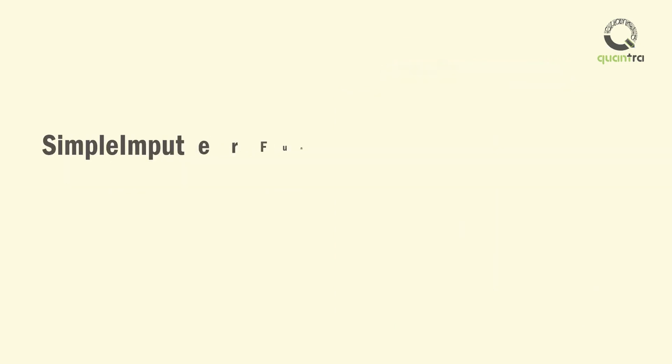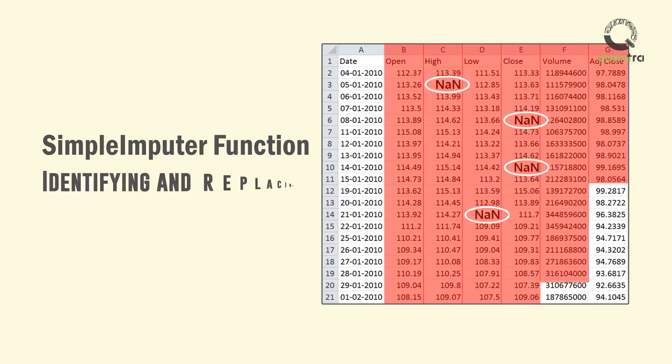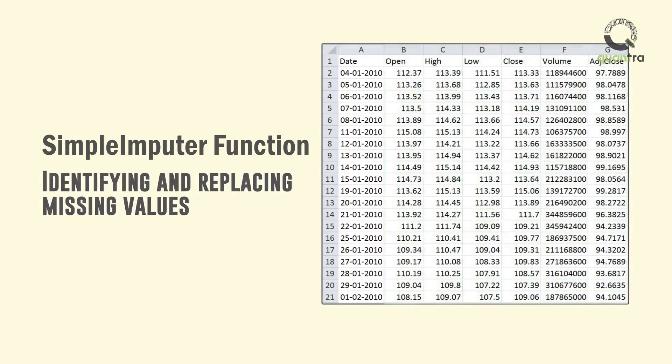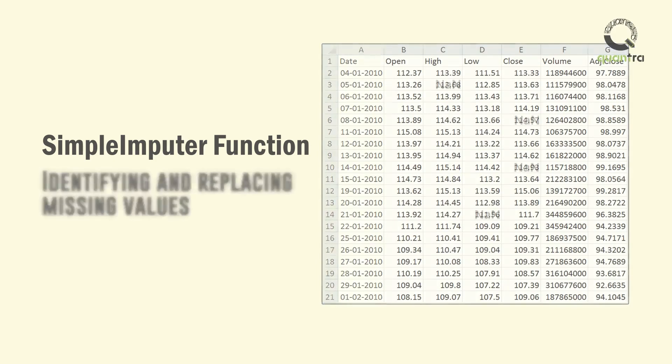For the S&P 500 index in our model, we instantiate the imputer function using the variable imp, which helps in identifying and replacing missing values. Imp will be called later through the pipeline function using steps to execute the data pre-processing. This will be discussed in more detail in the upcoming units.